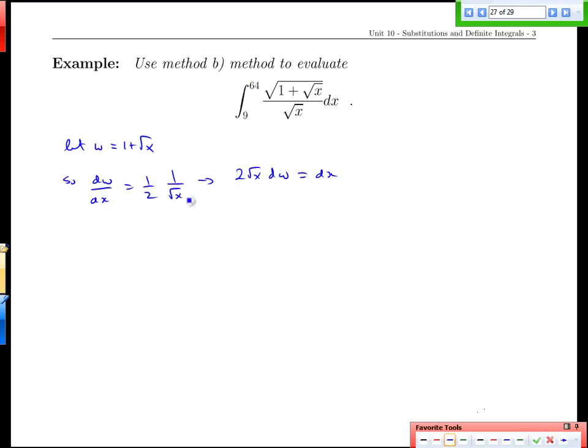So we're going to do the same substitution as usual, and we're actually going to keep these limits of integration around, but we're going to explicitly mark them as x's. Integral from 9 to 64, and I'm going to mention these explicitly as x values, and we have the square root of 1 plus root x over root x dx, that's our original. Now we include our substitution, keeping the limits the same but being explicit that these are x values. We have the square root of w over root x - that part was w - we keep the root x, and then the dx becomes 2 root x dw.